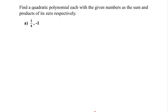Find a quadratic polynomial each with the given numbers as the sum and product of its zeros respectively. The question means we have to write a quadratic polynomial expression using these two numbers which represent the sum of the zeros and product of the zeros.